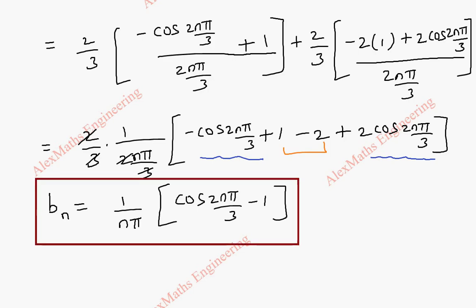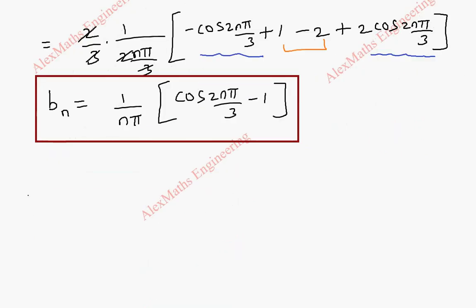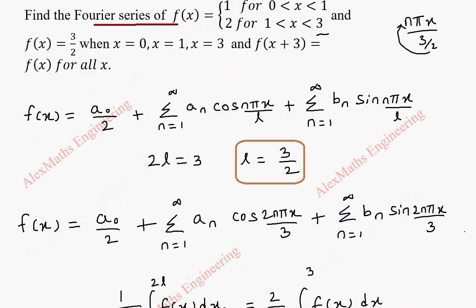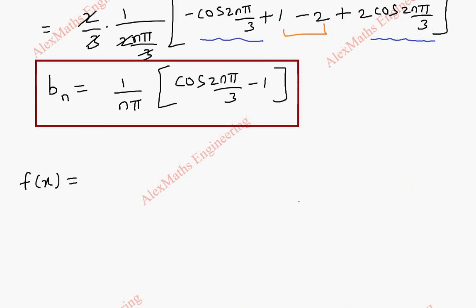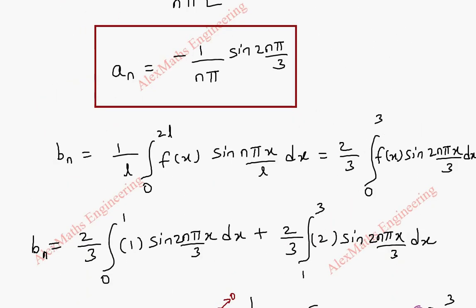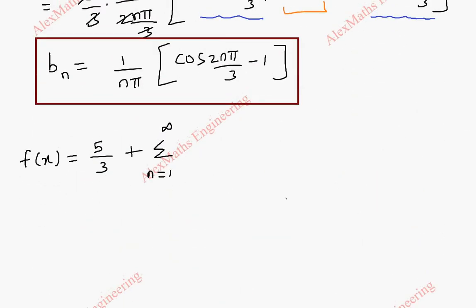Finally, we are going to replace a0, an, and bn in the f(x) formula written in the first step. So f(x) = a0/2, and a0 = 10/3, so a0/2 = 5/3. Plus summation n=1 to infinity of an·cos(2nπx/3), where an = −(1/nπ)·sin(2nπ/3), so this becomes −(1/nπ)·sin(2nπ/3)·cos(2nπx/3).